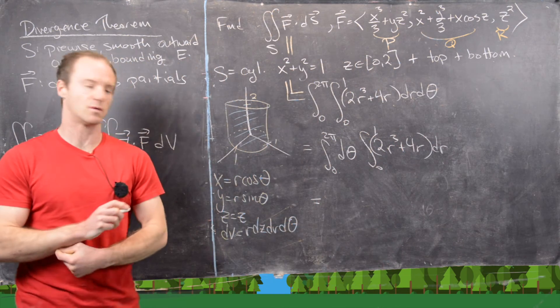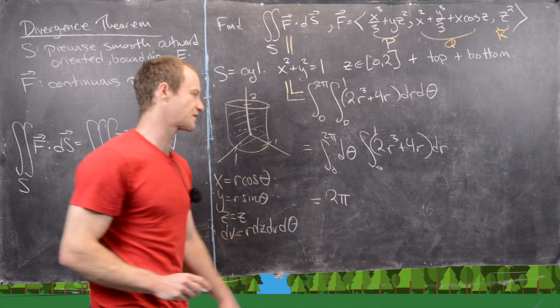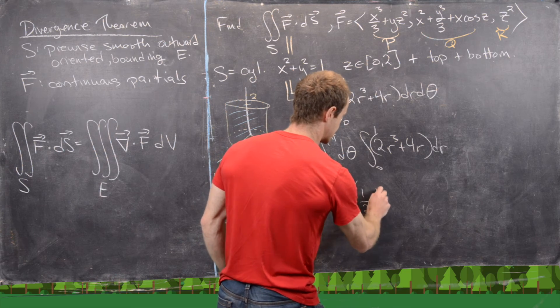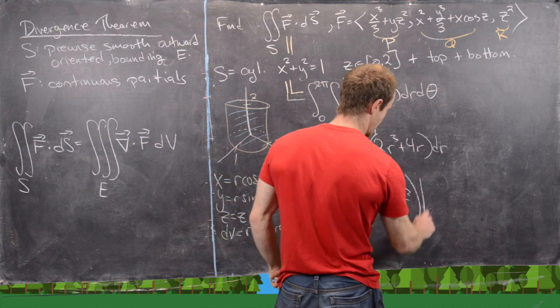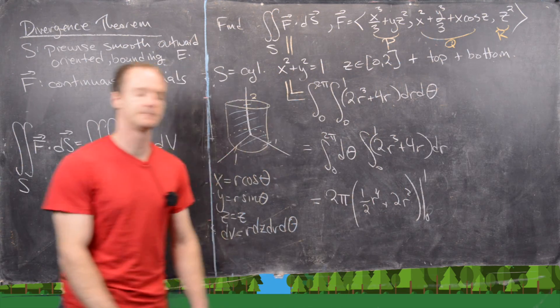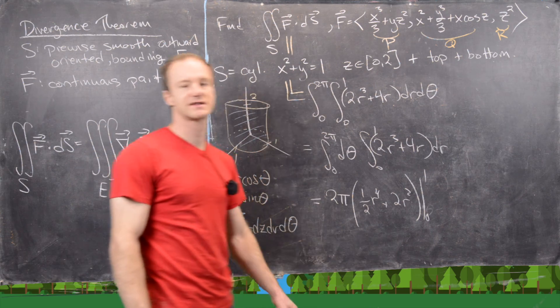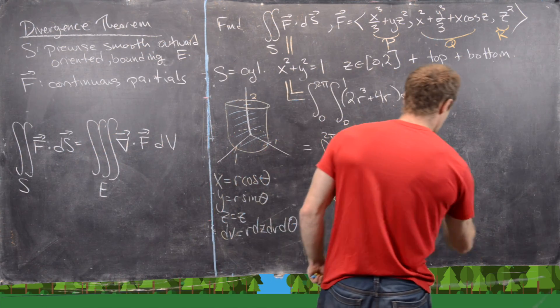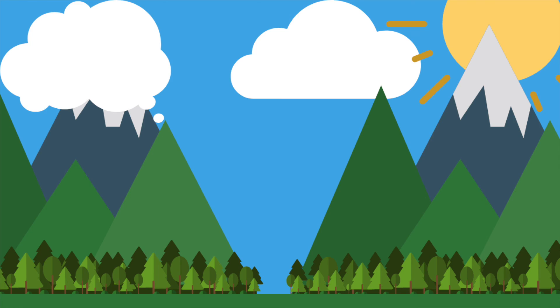Now those are some end of calculus 1 integrals, so they're pretty straightforward. Here we get 2pi for this first one, and now this is going to be 1 half r to the fourth plus 2r squared. We need to evaluate that from 0 to 1. Now plugging in 1 into this, we get half plus 2, so that's 5 halves times 2pi. That's going to give us 5pi, and that finishes this problem.